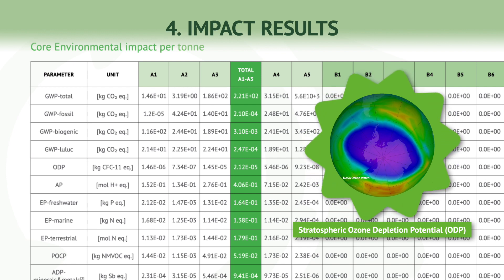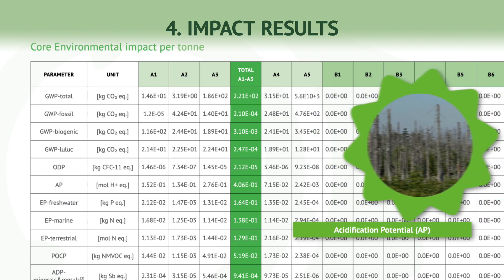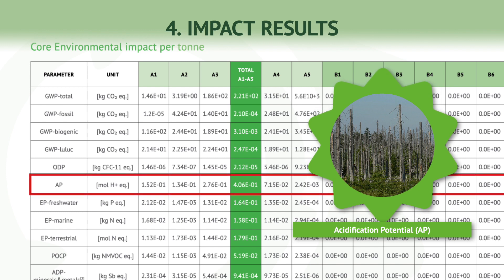The second indicator is Stratospheric Ozone Depletion Potential, or ODP. This indicator quantifies the effects of ozone-depleting gases, such as CFCs, HCFCs, and halons, which contribute to the depletion of the ozone layer in the stratosphere. The third indicator is Acidification Potential, or AP. Acidification measures the impact of acidic gases, such as sulfur dioxide (SO2), on ecosystems. These gases react with water in the atmosphere, resulting in acid rain that can cause damage to the environment.